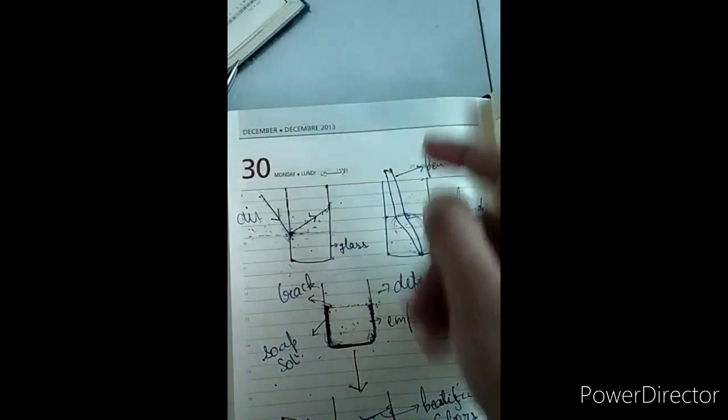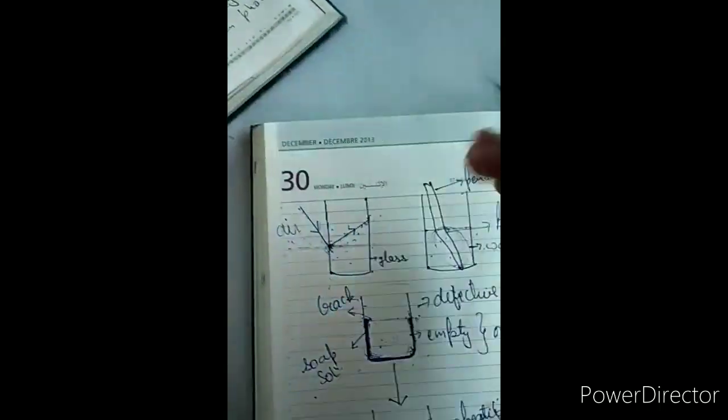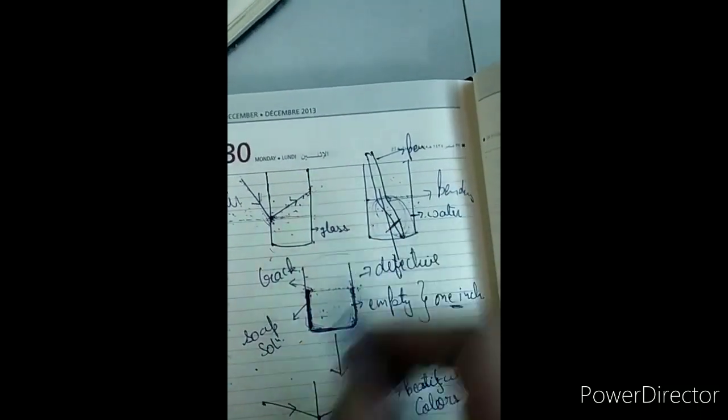So you can see the bend is not like this but it will go like this. It will bend from its original path. Its original path is like this, it should be like this, but it deviates from its original path.